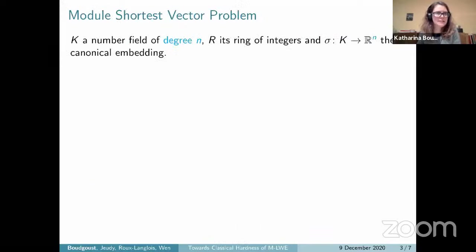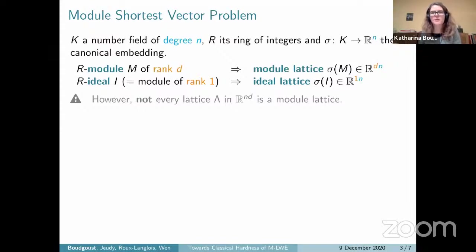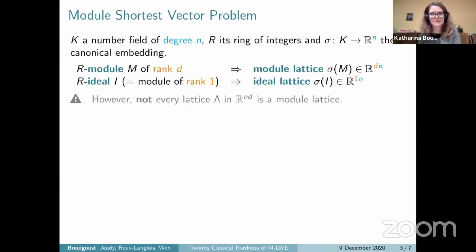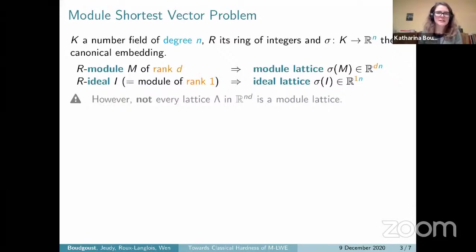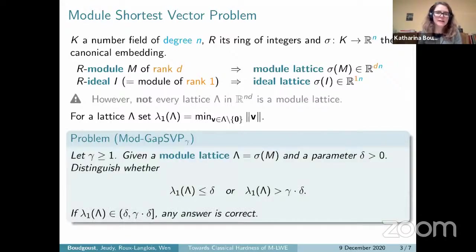The module LWE problem is parametrized by an underlying ring of degree N, which is our asymptotic parameter. 'Small' means the modulus can be polynomially small in N, and the rank will be linear in the ring degree. Let K be a number field of degree N and R its ring of integers. Any module of rank D defines a module lattice via the canonical embedding into the Euclidean space of dimension DN, and every ideal — a module of rank one — defines an ideal lattice. Module lattices are special lattices; not every lattice in R^{DN} is a module lattice.